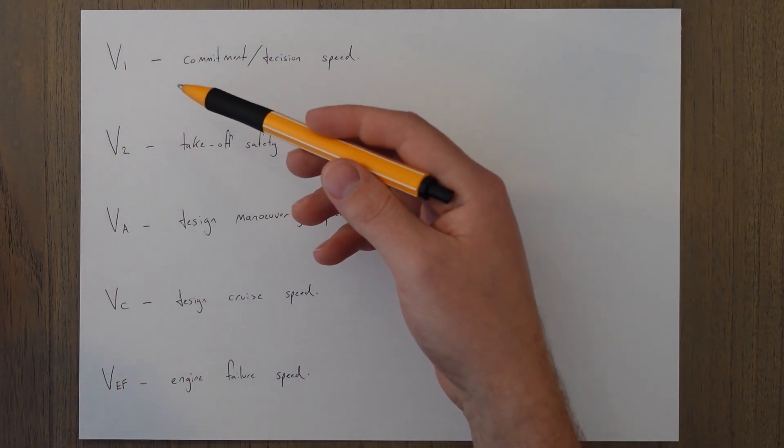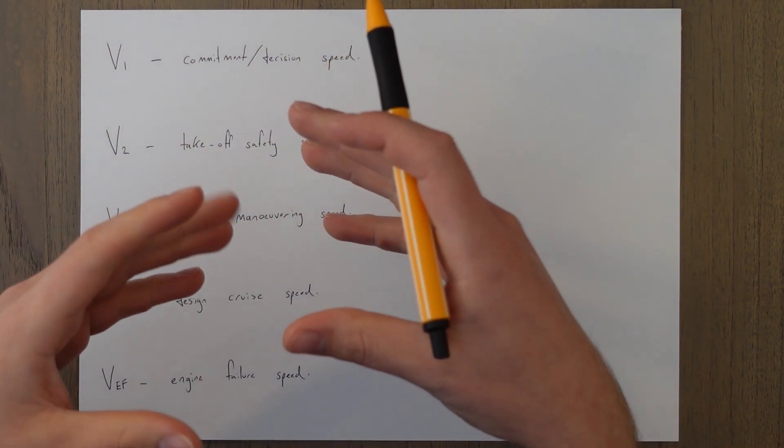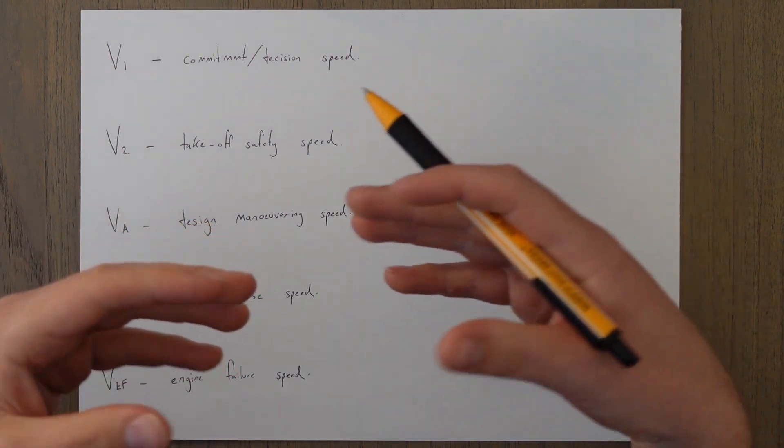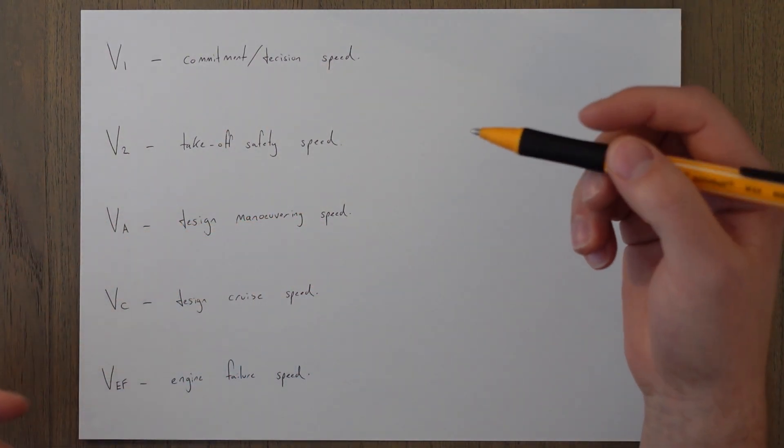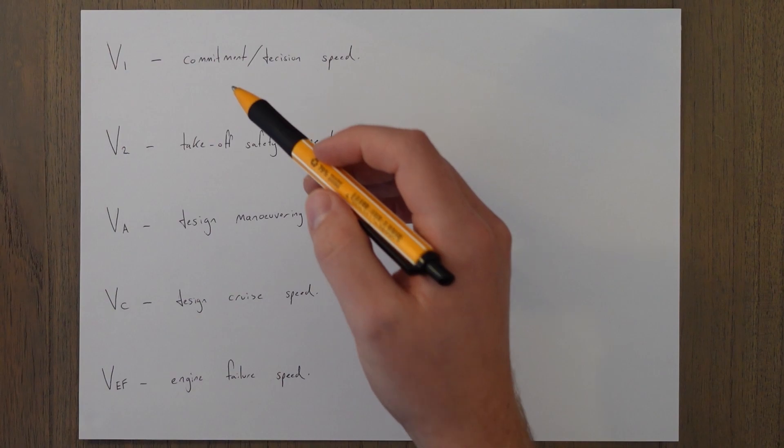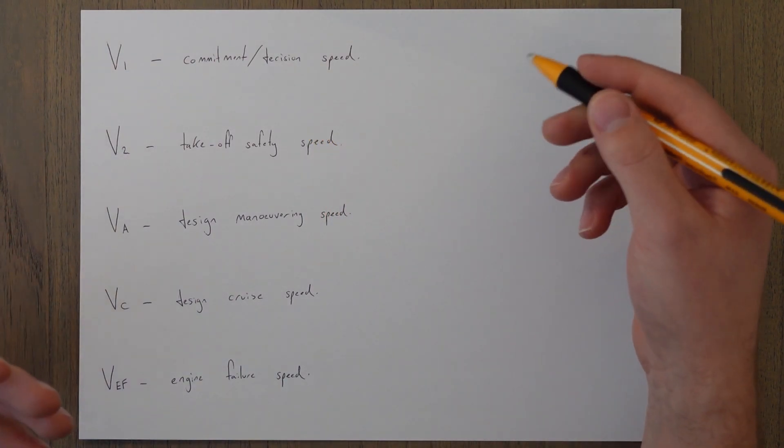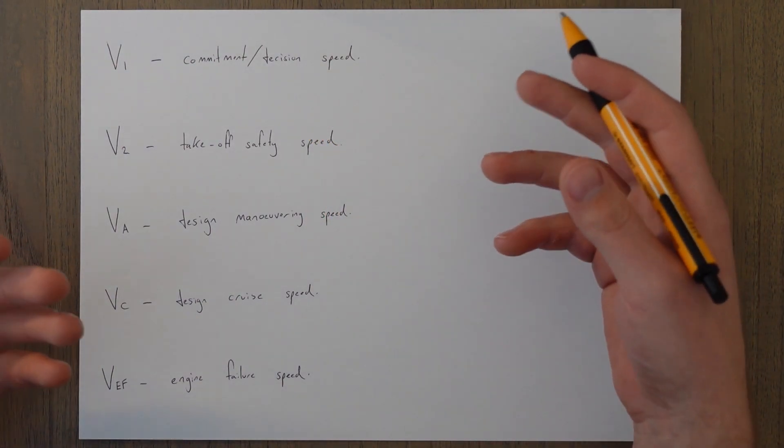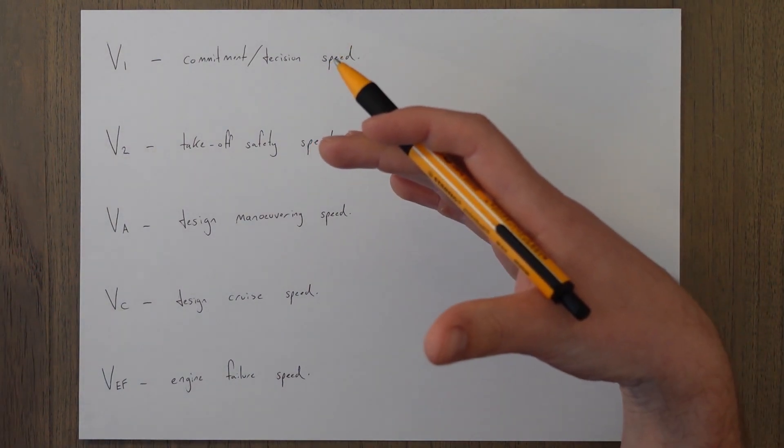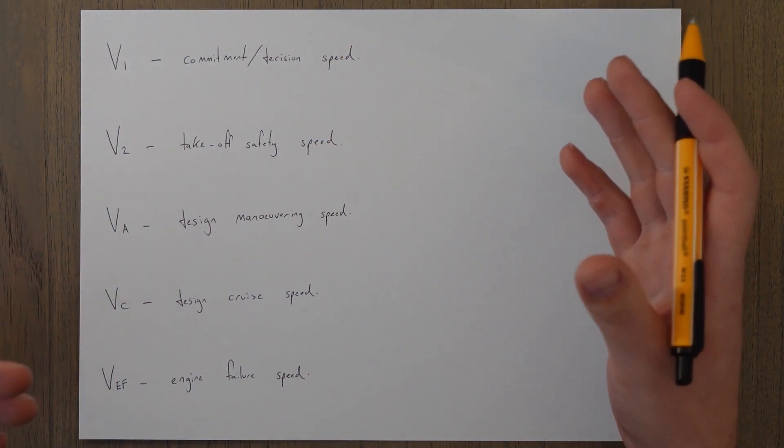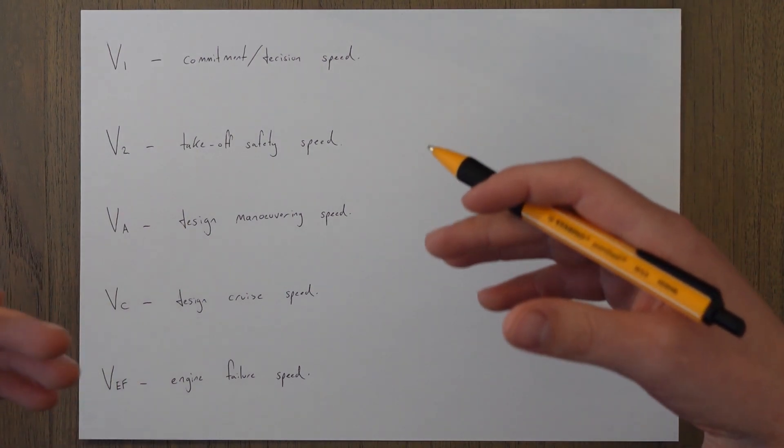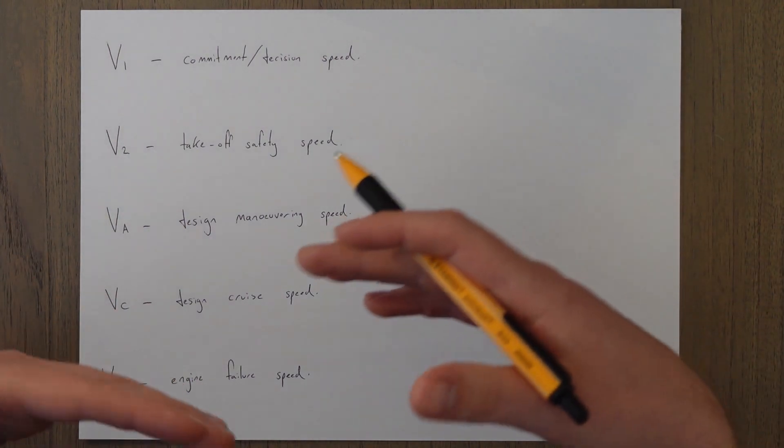So the first one we're going to look at is V1 and this is quite a complicated speed which I will dive into a bit more in the Class A regulations, but basically it's a commitment or decision speed. So beyond V1 speed the takeoff should no longer be aborted.